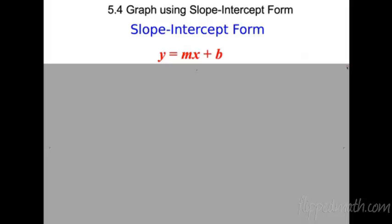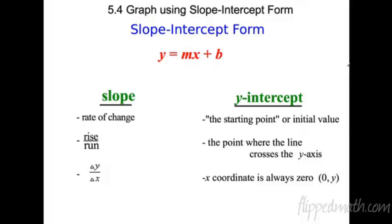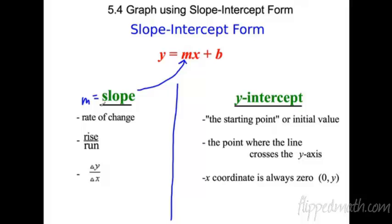We're doing 5.4 — this section is huge, it's like a defining moment in algebra. We have to be able to do this; we're going to do it the rest of the year. It's slope-intercept form: y equals mx plus b. If you got through slope, you're ready for this. In y equals mx plus b, m stands for slope. You have to think of slope as rate of change — they're interchangeable.